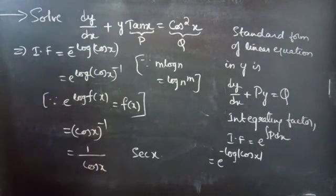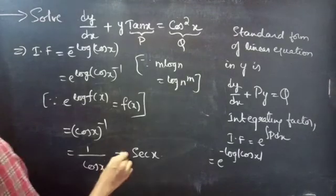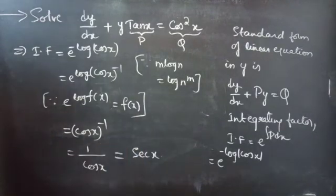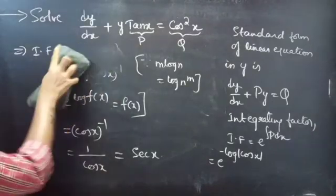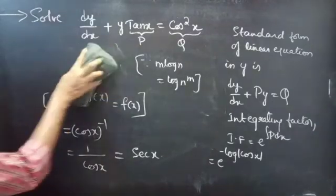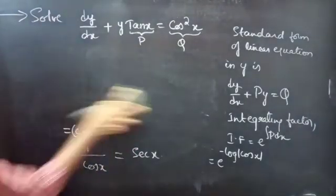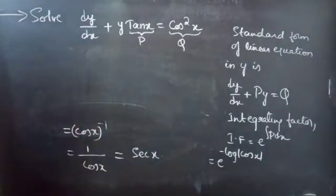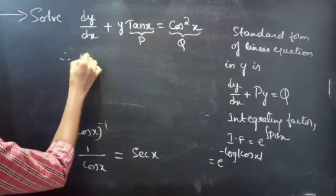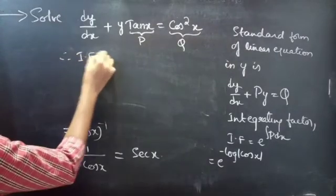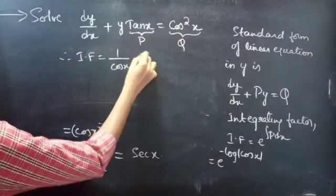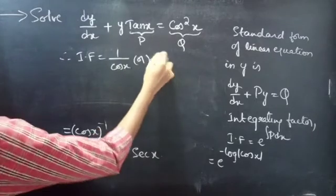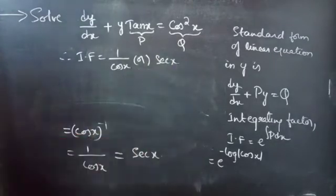You can simply write this as 1 by cos x, or sec x, since 1 by cos x is sec x. Therefore, our integrating factor is 1 by cos x, or sec x.